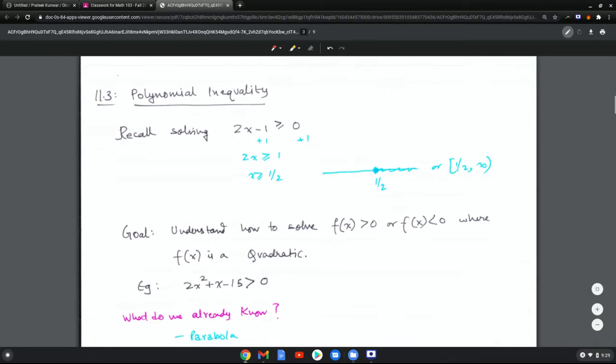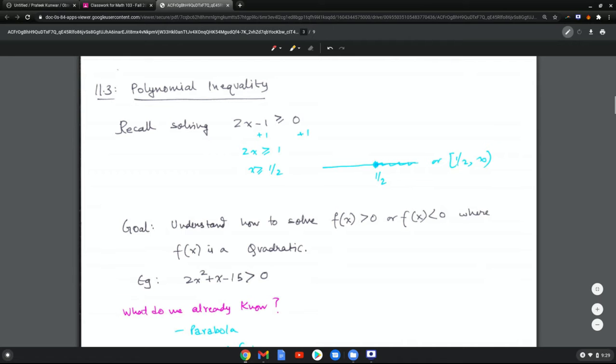The topic is polynomial inequality. We've looked at linear inequality before, where we had something like 2x minus 1 greater than or equal to 0. What you do is you isolate the x and you reach a solution on the number line which says x is greater than or equal to one half. And remember most of the solutions we had were either one end of the number line or they were between two points when you had absolute inequalities.